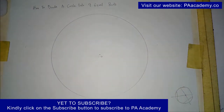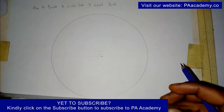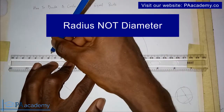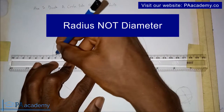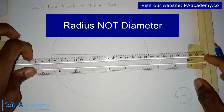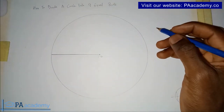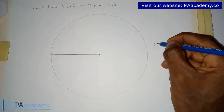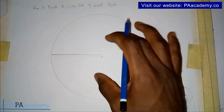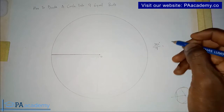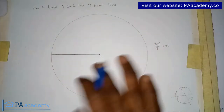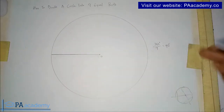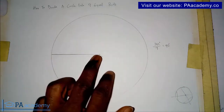Now that we have the center of our circle, the first thing you are going to draw is the diameter. The total angle in a circle is 360 degrees. Since we are dividing into nine equal parts, 360 degrees divided by nine gives us 40 degrees. That means each angle in this circle is going to be 40 degrees apart.